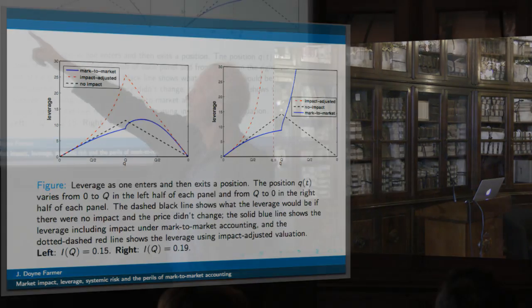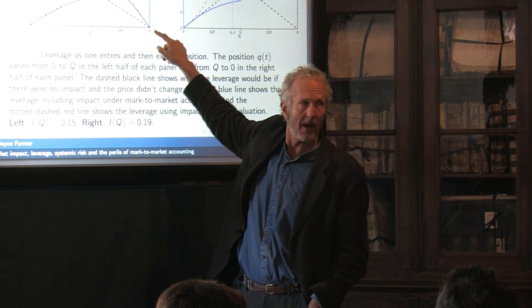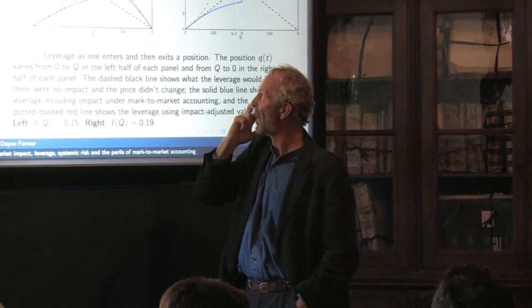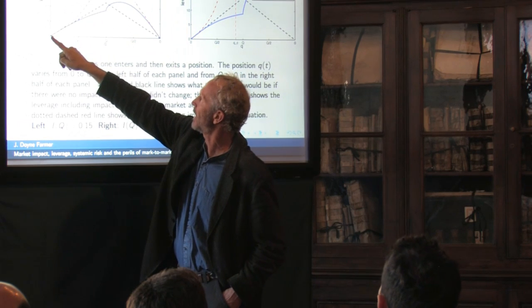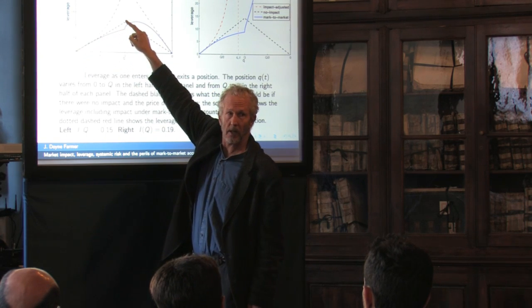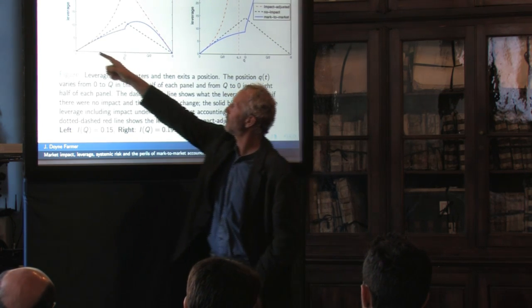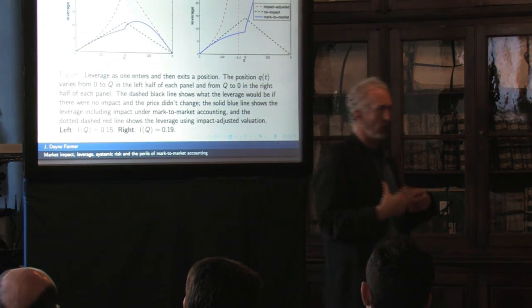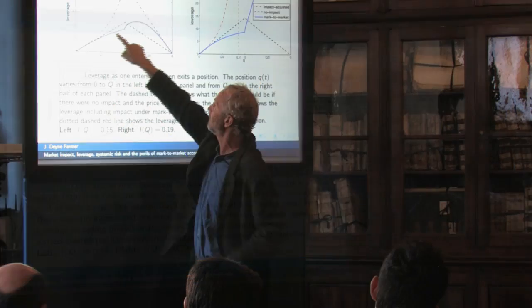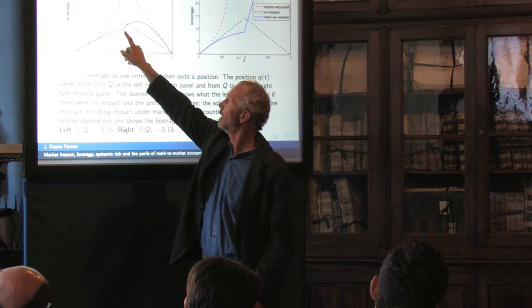Let's imagine first buying into and then selling out of a position. You start your position at zero, you buy into it so a little q goes up to capital Q, then you sell back out and go back down to zero. Under the no-impact scenario, your leverage will just go up linearly and back down linearly. Under mark-to-market accounting, as you're buying into the position you're pushing the price up, which pushes your leverage down relative to where it would be with no market impact. So your leverage ends up being less than it really ought to be.